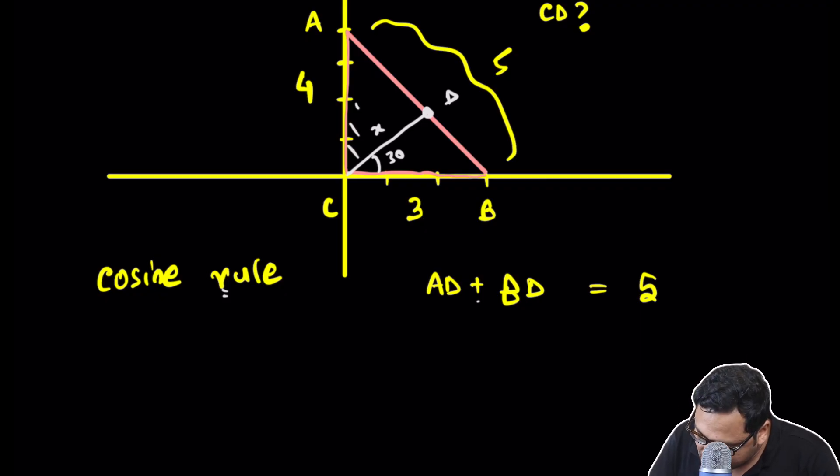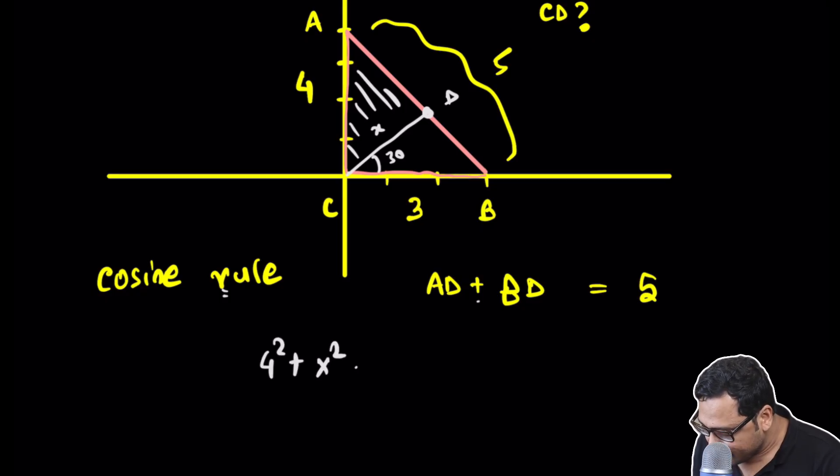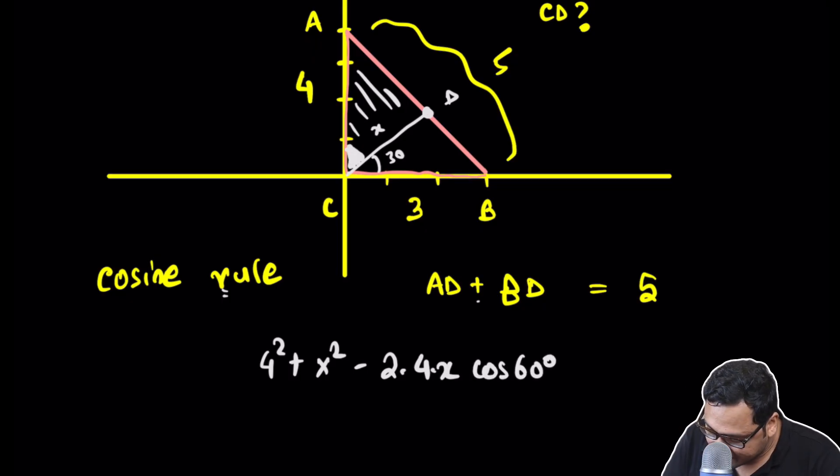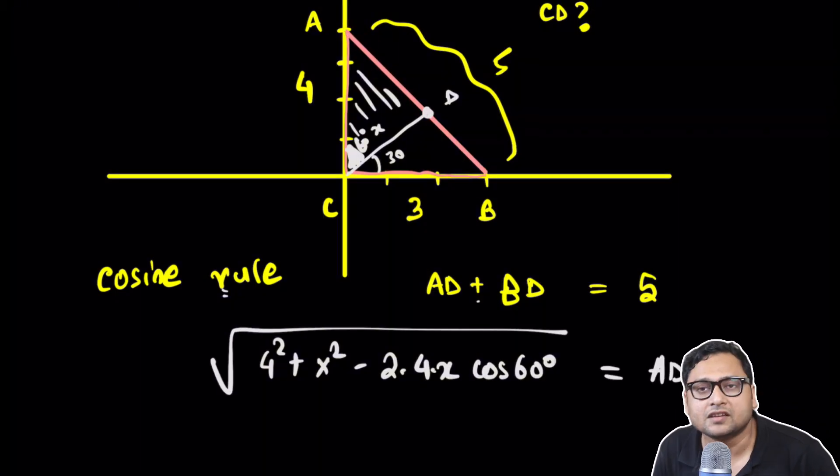First let's look at this particular triangle. If I use the cosine rule, it says that 4 squared plus X squared minus 2 times 4 times X cosine of 60 degrees, because this angle is 60 degrees (this is 30 means this is 60), is equal to AD squared. So if I take the square root of it, it will be equal to AD.